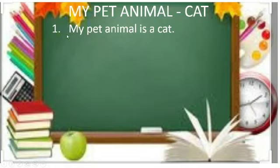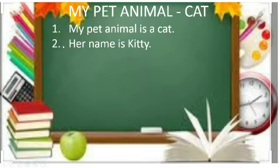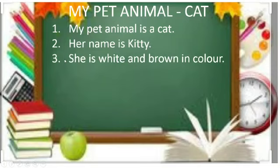Number one: My pet animal is a cat. Do you like cat? I like cat. If you like dog, you can write dog. Number two: Her name is Kitty. Number three: She is white and brown in color.